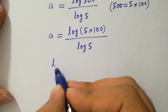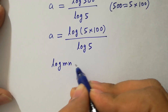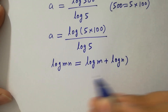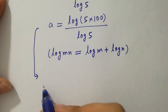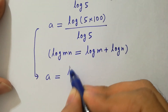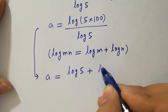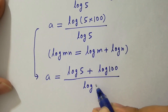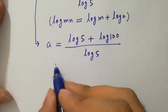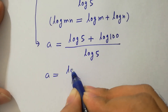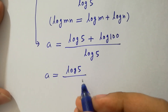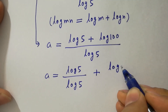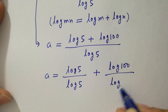Since log m·n equals log m plus log n, a equals log 5 plus log 100, all over log 5. The log 5 terms cancel, leaving a equal to log 100 over log 5.